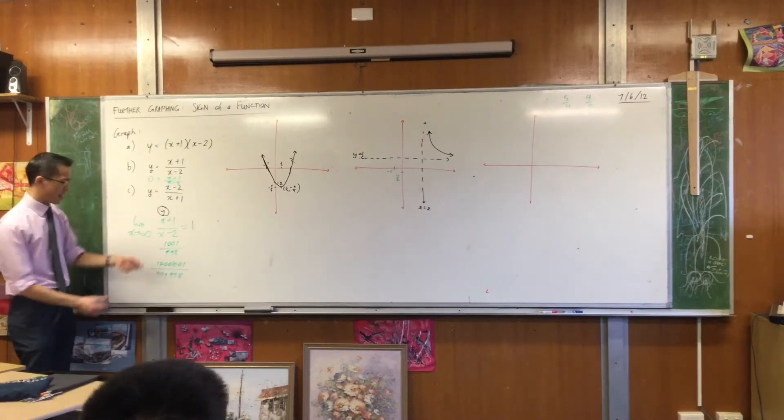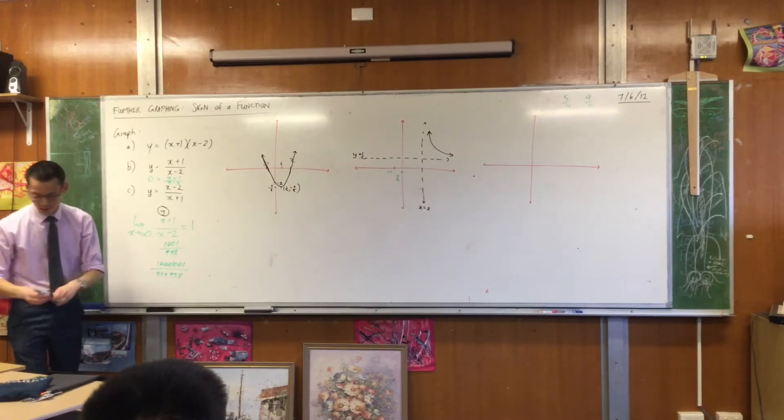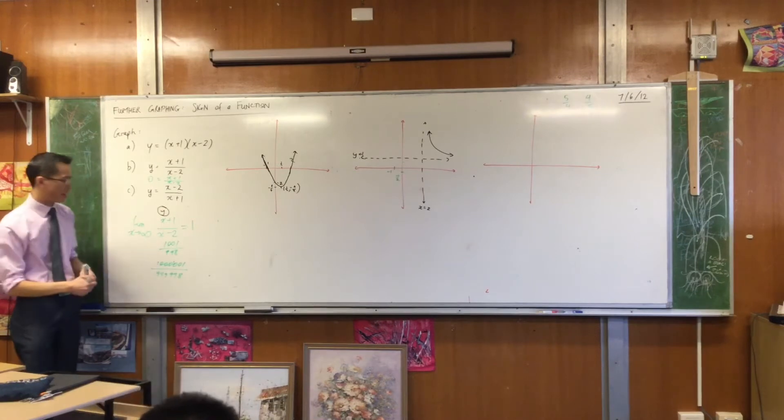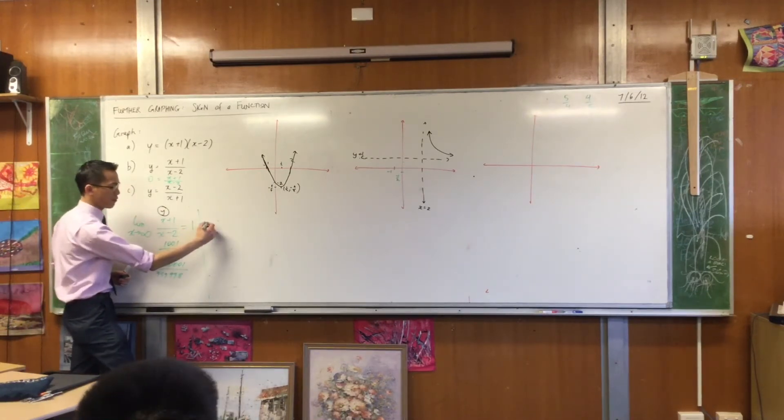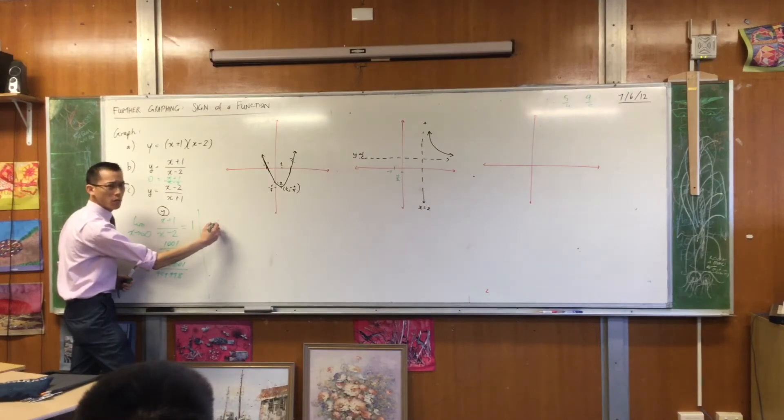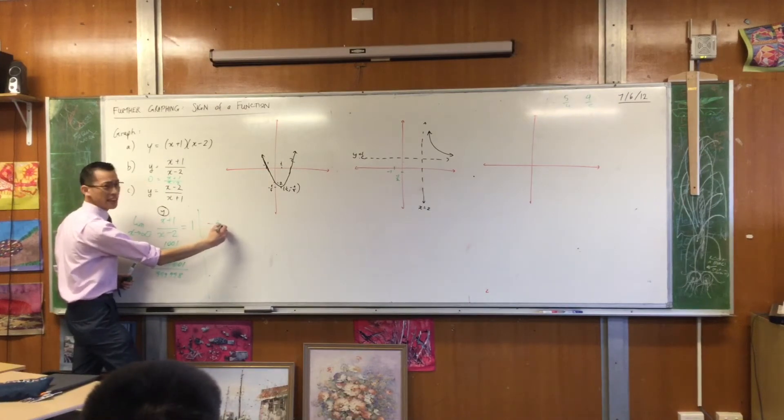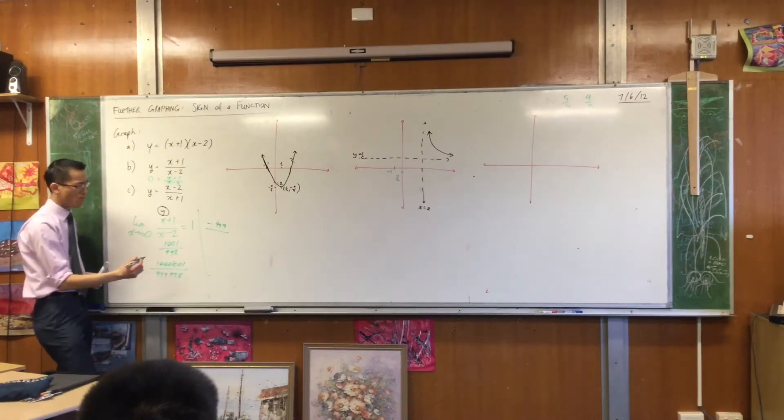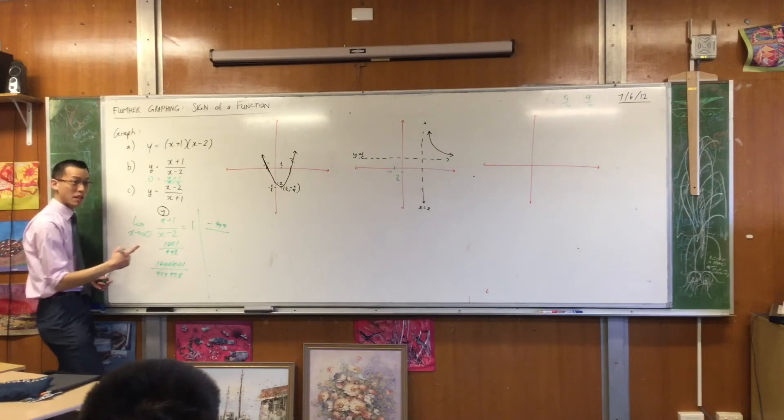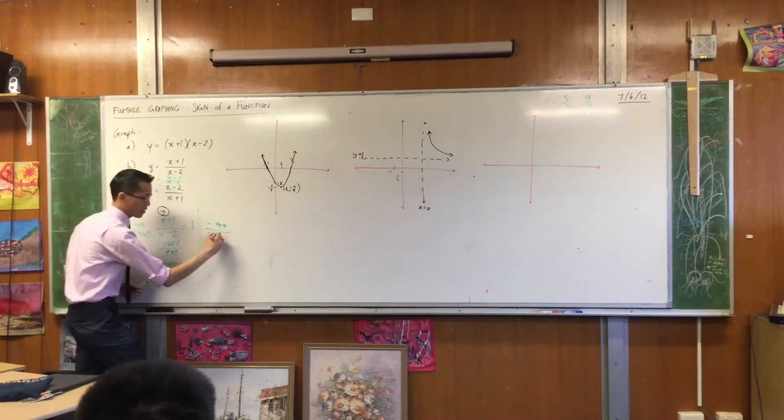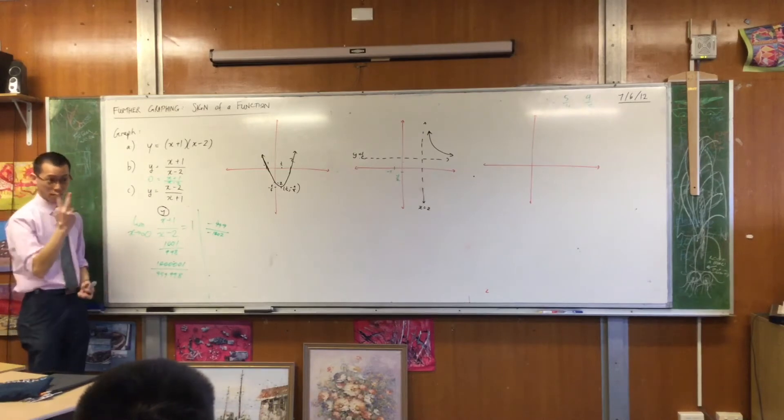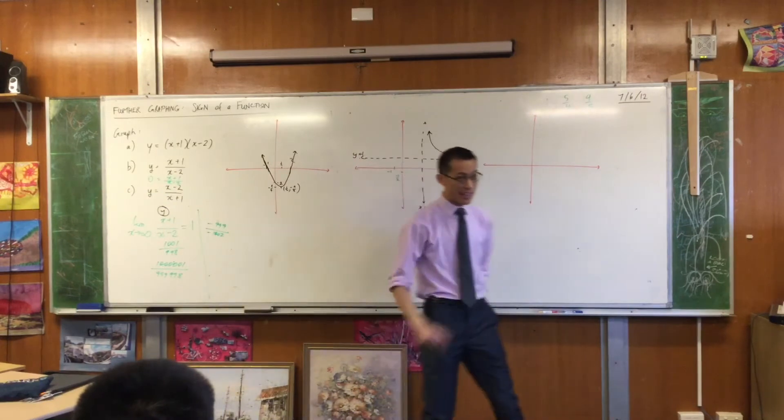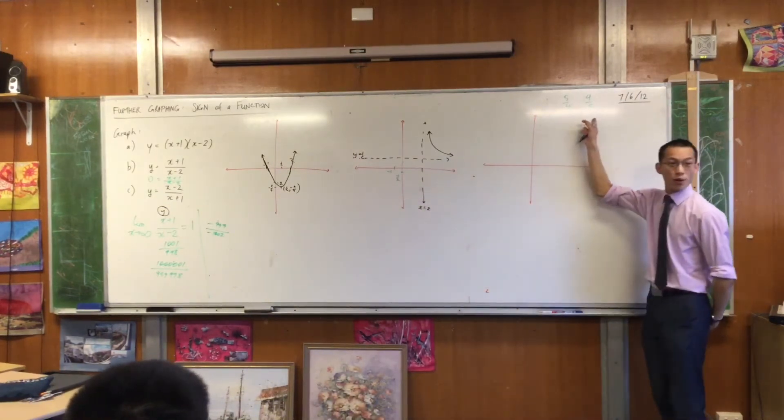On the left-hand side, if I repeat this exercise but with negative values, think about it. Negative values. Instead of positive 1,000, let's put in negative 1,000. I'm going to have negative what on the top? 999. Right? What's going to be on the bottom? I'm putting in negative 1,000. I'm substituting in negative 1,000. Negative 1,002. Those negatives are going to cancel because there's two of them. Now, is this number above or below 1? Isn't it ever so slightly below 1?